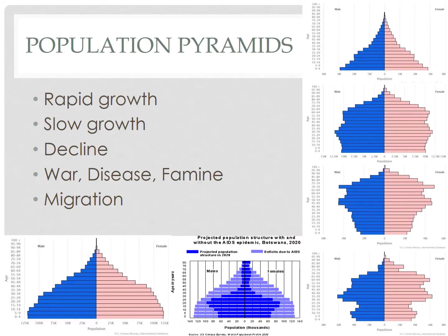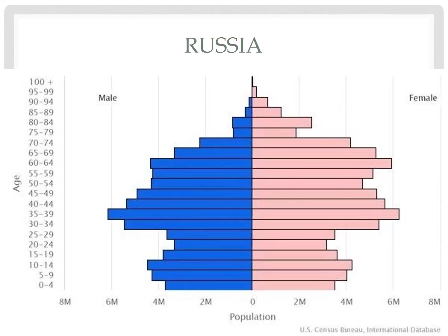Population pyramids can be used to examine the unique opportunities or challenges that countries may face, and they can reflect the areas that governments and their policies may need to address. For example, Russia's population pyramid still shows the legacy of World War II, with significantly fewer men than women, particularly in the oldest cohorts.